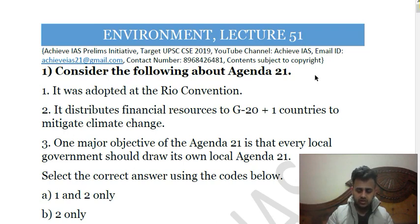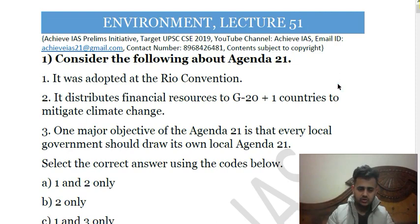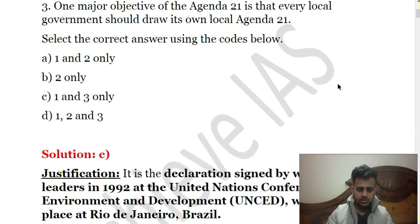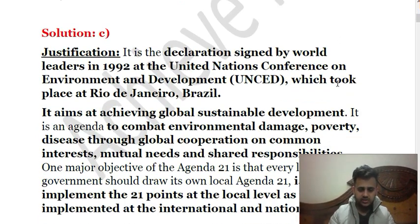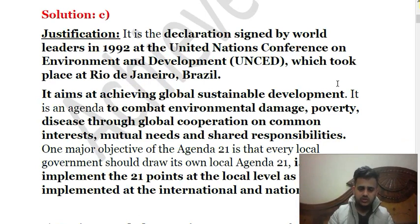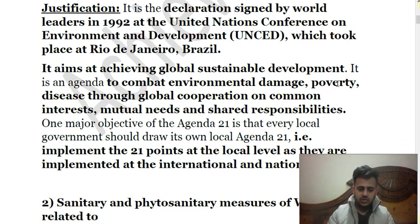The Rio summit focused on sustainable development. The second statement is totally incorrect — there is no logic to it. The third statement is correct: Agenda 21 adopted in Rio de Janeiro argued for the preparation of local plans by local and national governments, since Agenda 21 was to be implemented at the international level and local concerns needed to be included. So the answer is C — one and three only. Agenda 21 was declared by leaders in 1992 at the United Nations Conference on Environment and Sustainable Development held in Rio de Janeiro, Brazil.